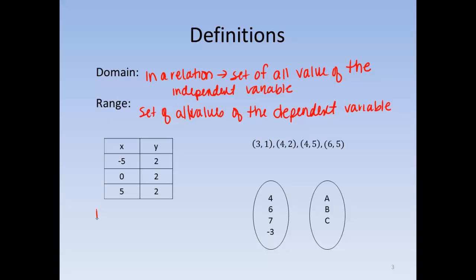So here, if we were to list our domain and our range for this relation, we would say that our domain is negative 5, 0, and positive 5. And our range is the value 2.